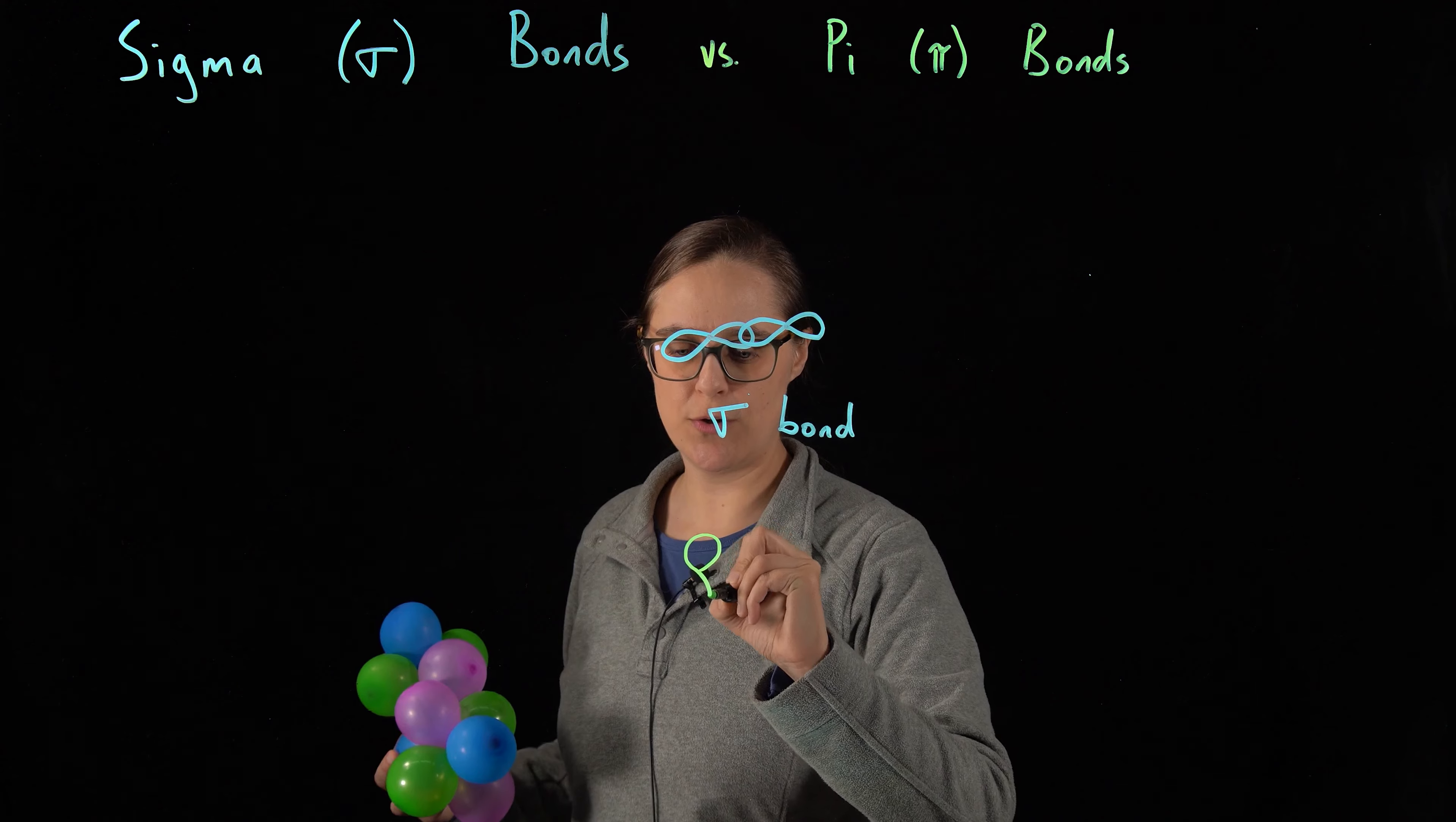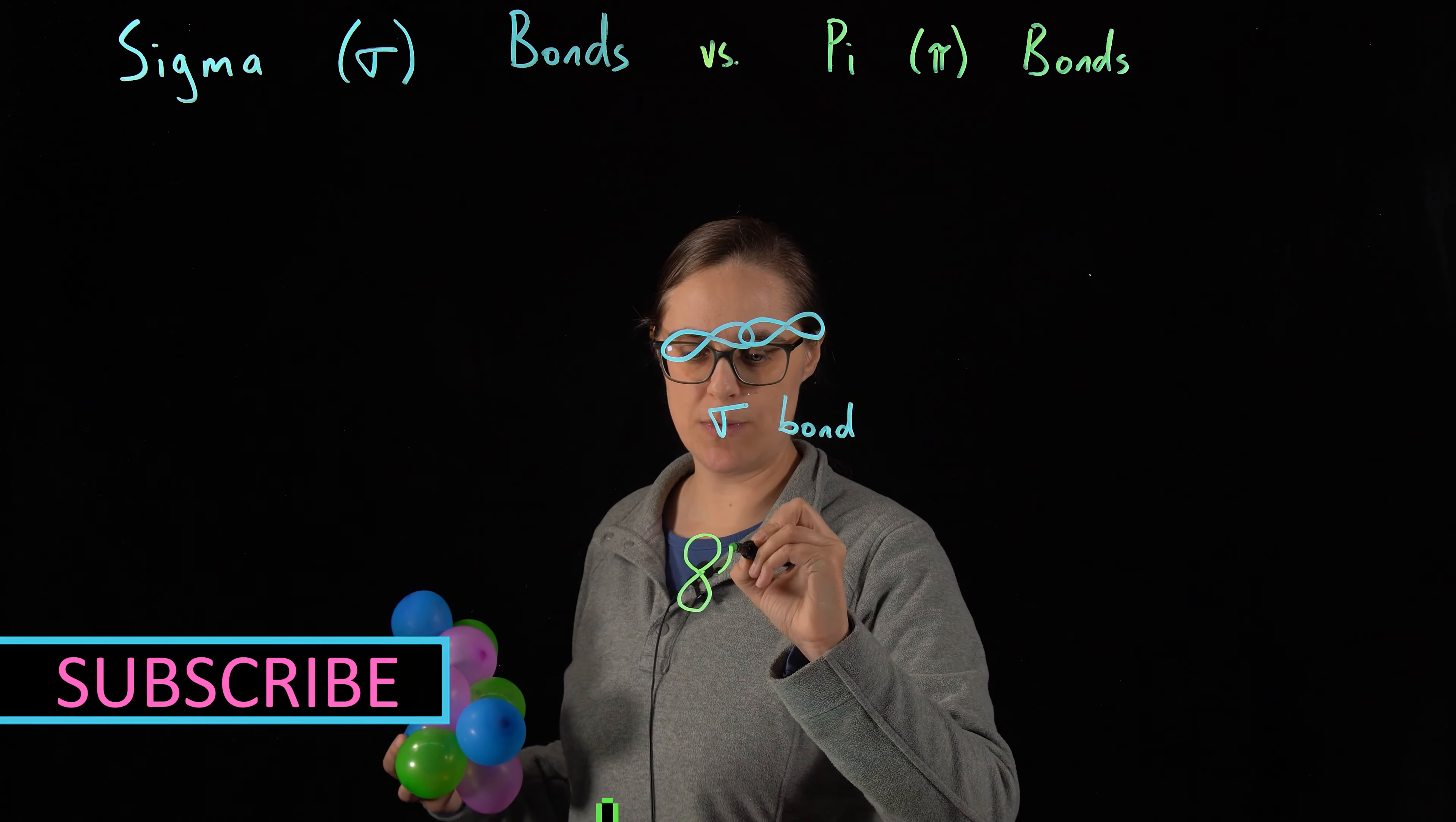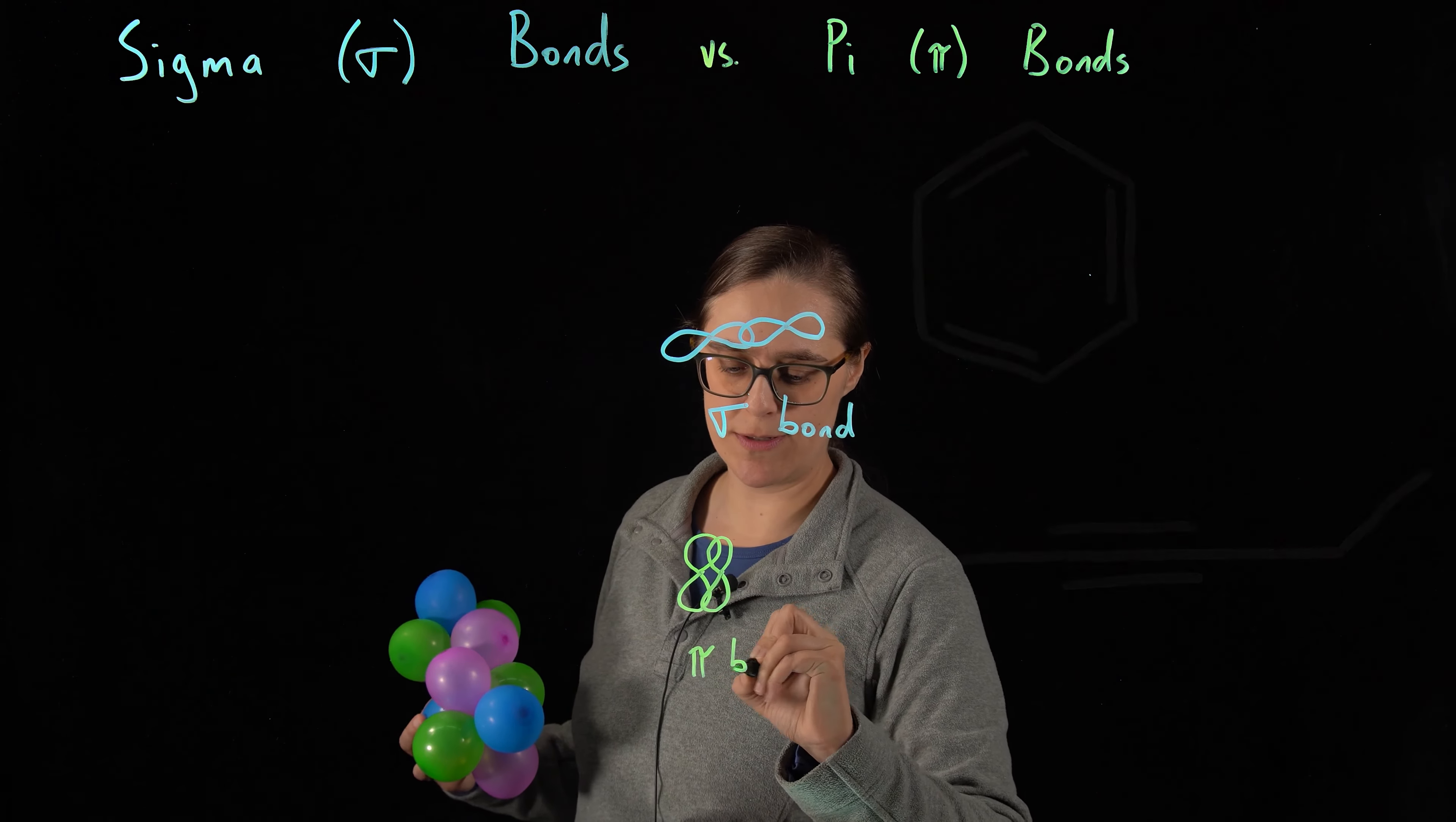So if you wanted your green orbitals to overlap, maintaining this sigma bond, they would need to be this side-to-side overlap. This is called a pi bond.